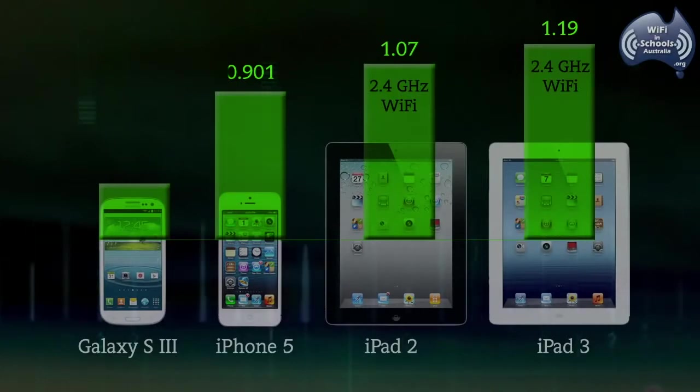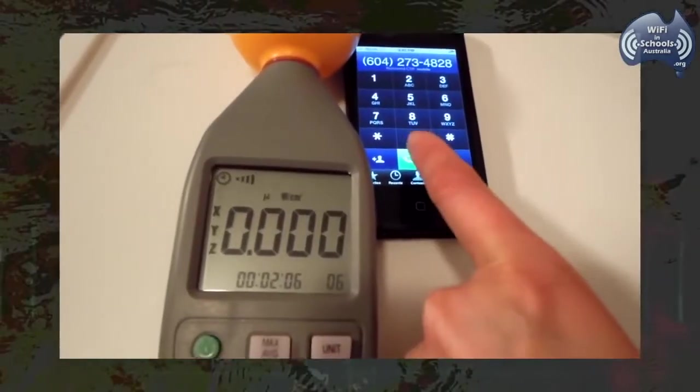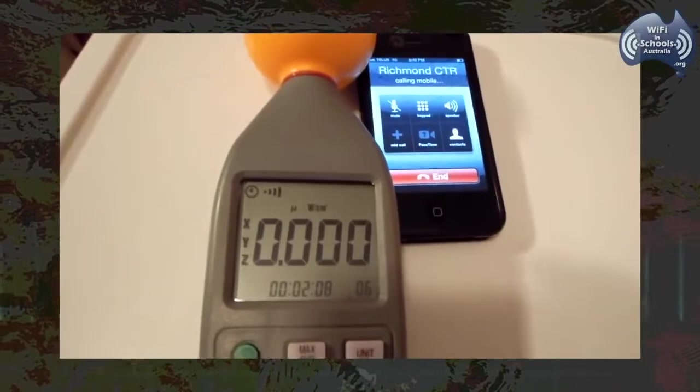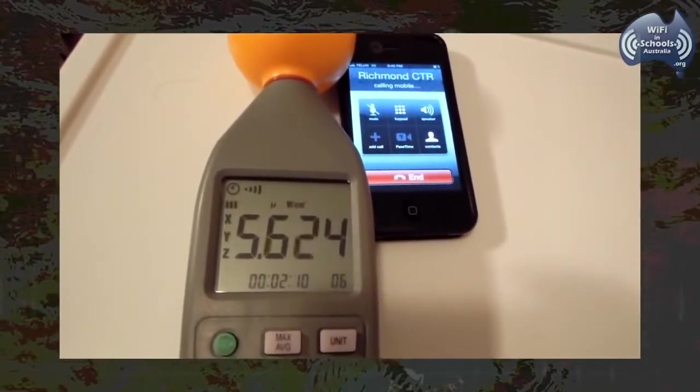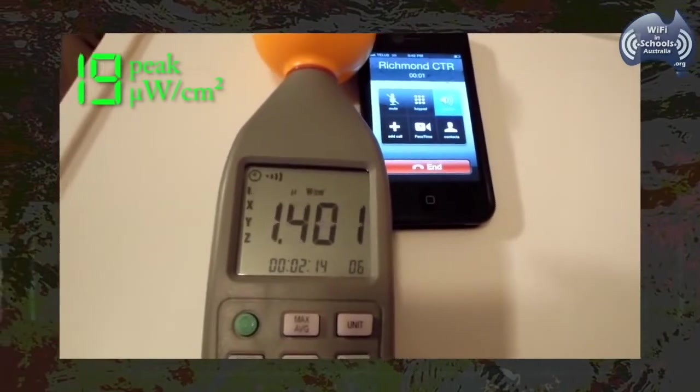In a real-life test, an iPhone and an iPad were measured using an RF EMR meter. First, the iPhone. A call was put through, and the measurement was taken on talk mode. The meter peaked at 19 with a continuous signal for the duration of the call.